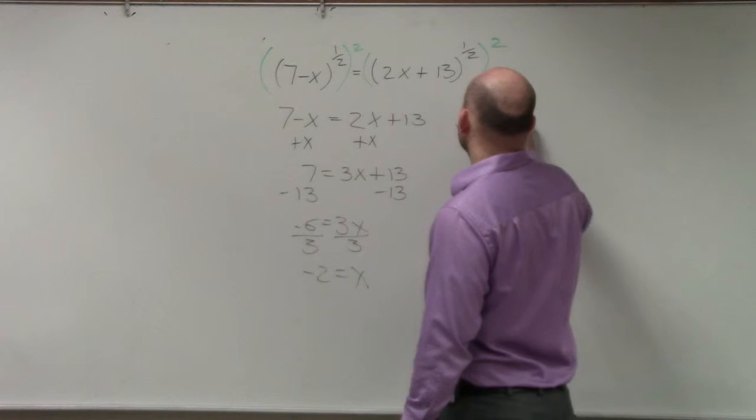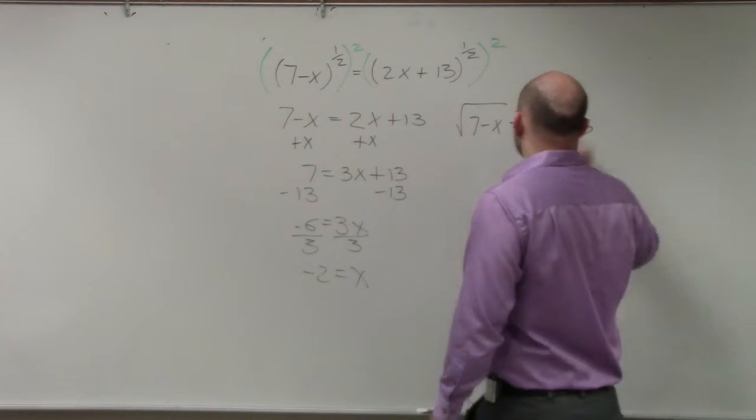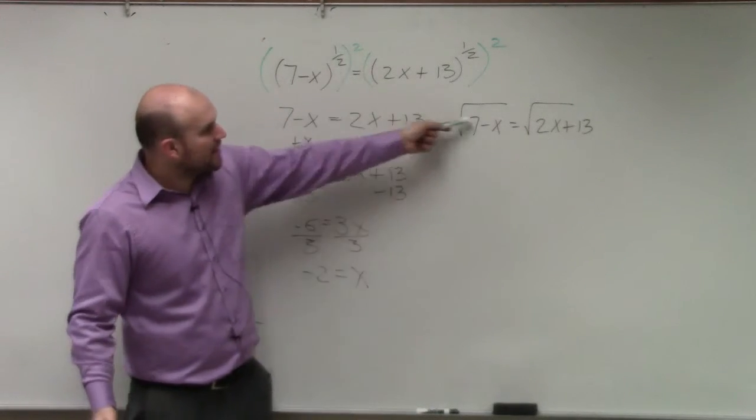Square root of 7 minus x equals the square root of 2x plus 13. Is everybody, again, OK with me rewriting these rational powers as square roots?